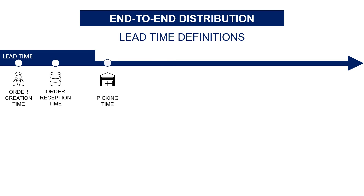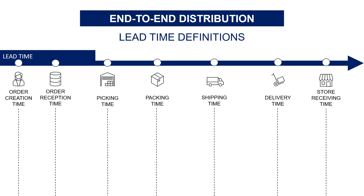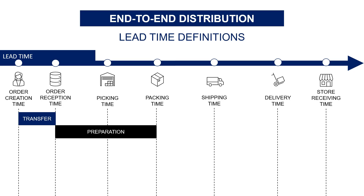How do we define a lead time by process? This is the time between two timestamps. Order transfer lead time is the time between the order creation and the order reception in the WMS. Preparation lead time is between the order preparation and the packing — this is usually the responsibility of the warehouse.